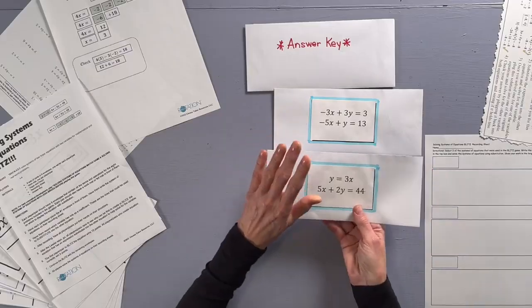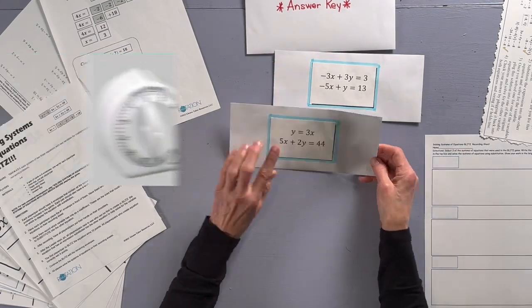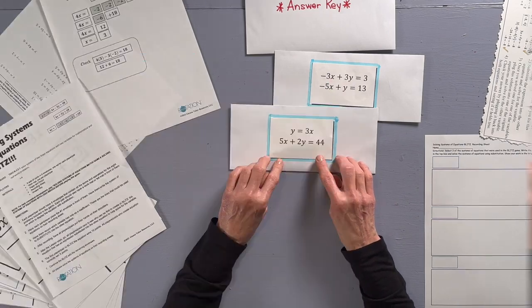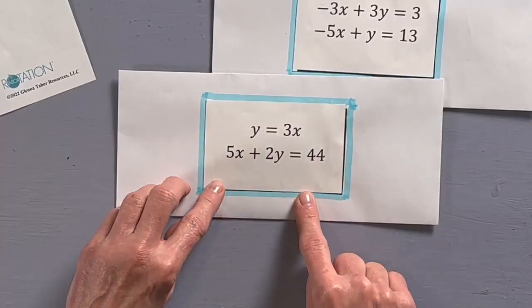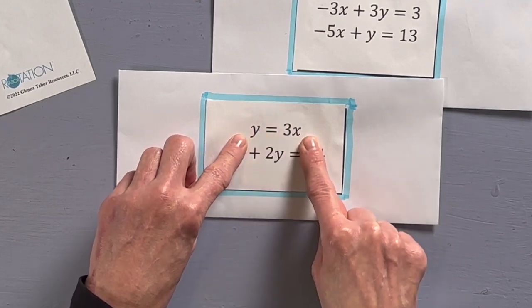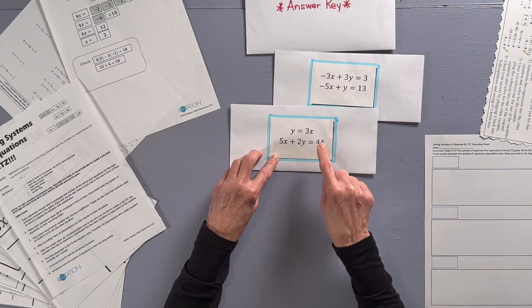Every player or pair selects the same envelope with the same system of equations on the front. Set a timer for one to two minutes and encourage players to think about how they could substitute the value of this equation on the top into the bottom equation in for that variable.